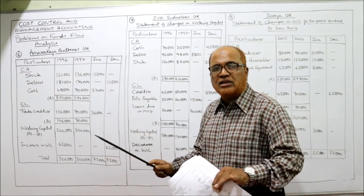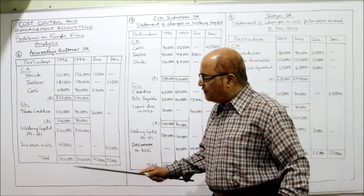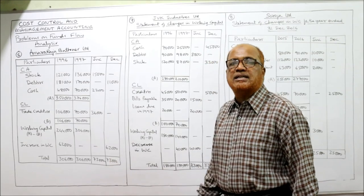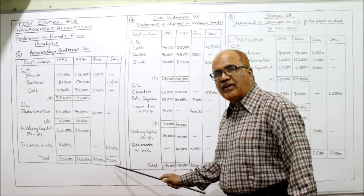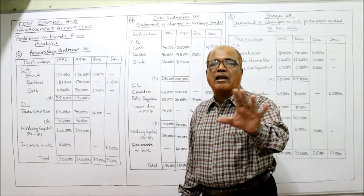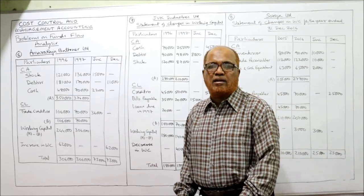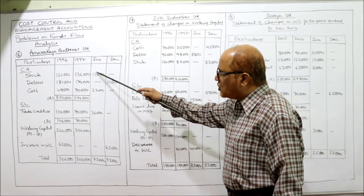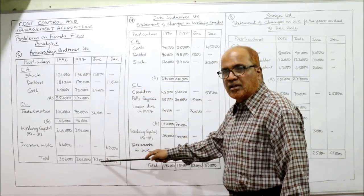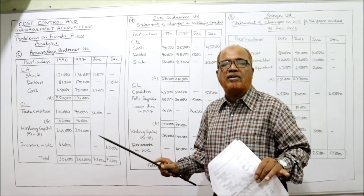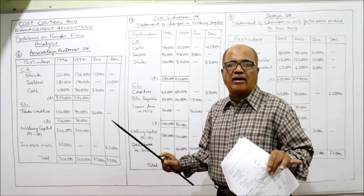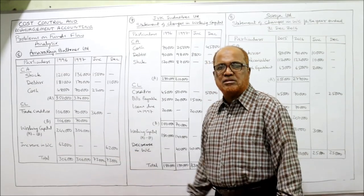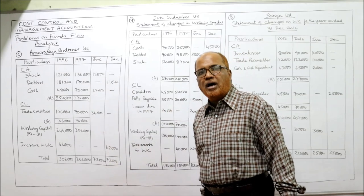If you have not committed any mistake, the totals of the increase and decrease columns must tally. Total of decrease column: 11,000 plus 62,000 equals 73,000. Total of increase column also equals 73,000. Both are equal, so our calculations are absolutely right. Our answer is increase in working capital of 62,000. This is the end of problem number 6.